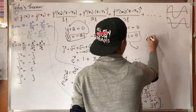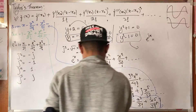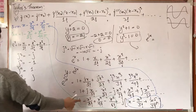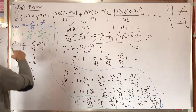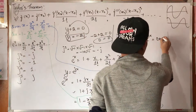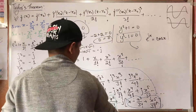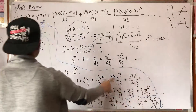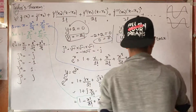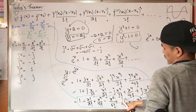Therefore, e to the power jx equals the two series: the cosine series plus the complex number j times the sine series. That is, e^(jx) = cos x + j sin x.